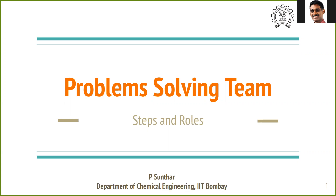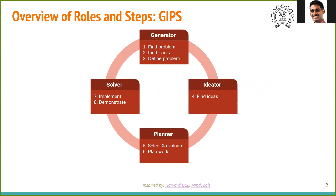Welcome. In this short video we'll see how a team uses various methods to solve a problem. We'll have different roles of team members and a sequence of steps in which these various team members play different roles. There are four different main roles that are part of a team and they play complementary activities to solve the problem. These ideas are taken from references shown here from Harvard DCE and Mind Tools.